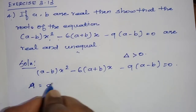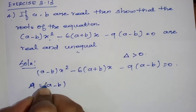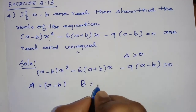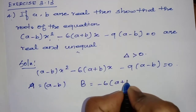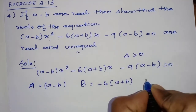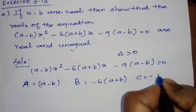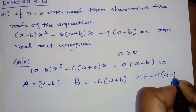Now we identify the coefficients. Capital A is the coefficient of x squared, so A = (a minus b). Capital B = minus 6 into (a plus b). Capital C = minus 9 into (a minus b).